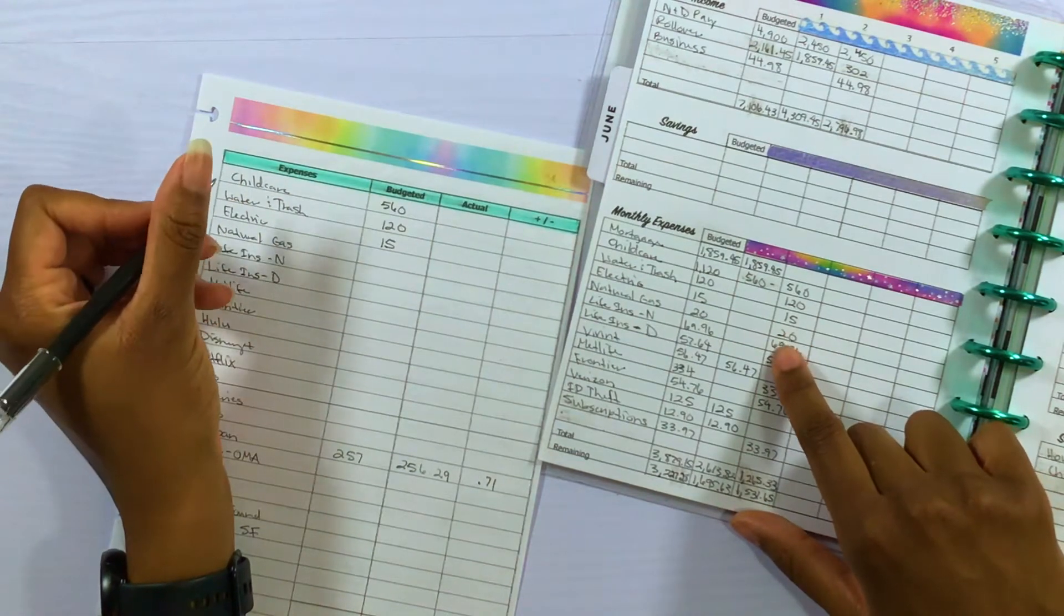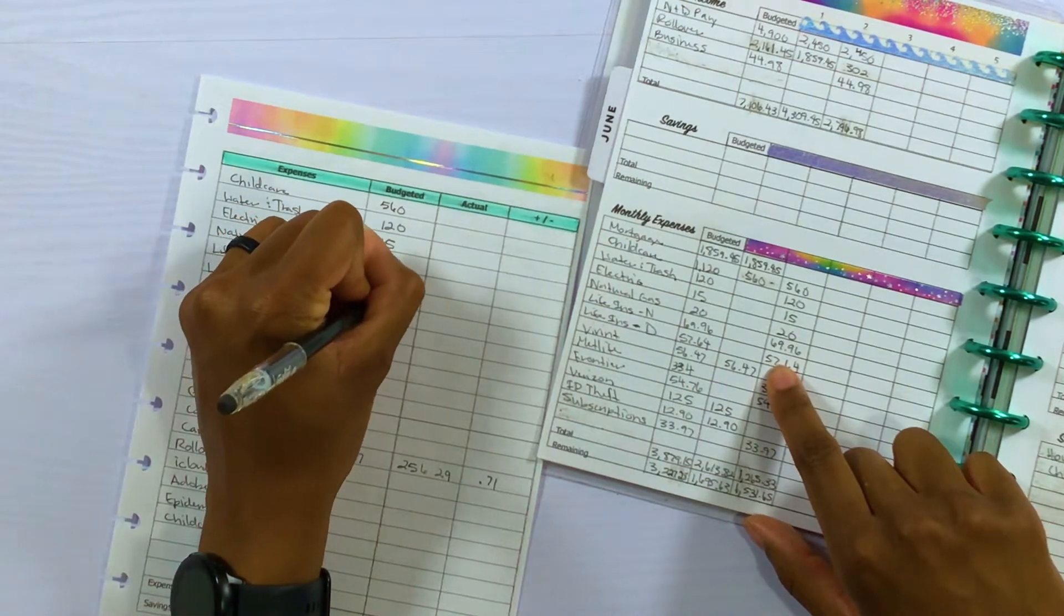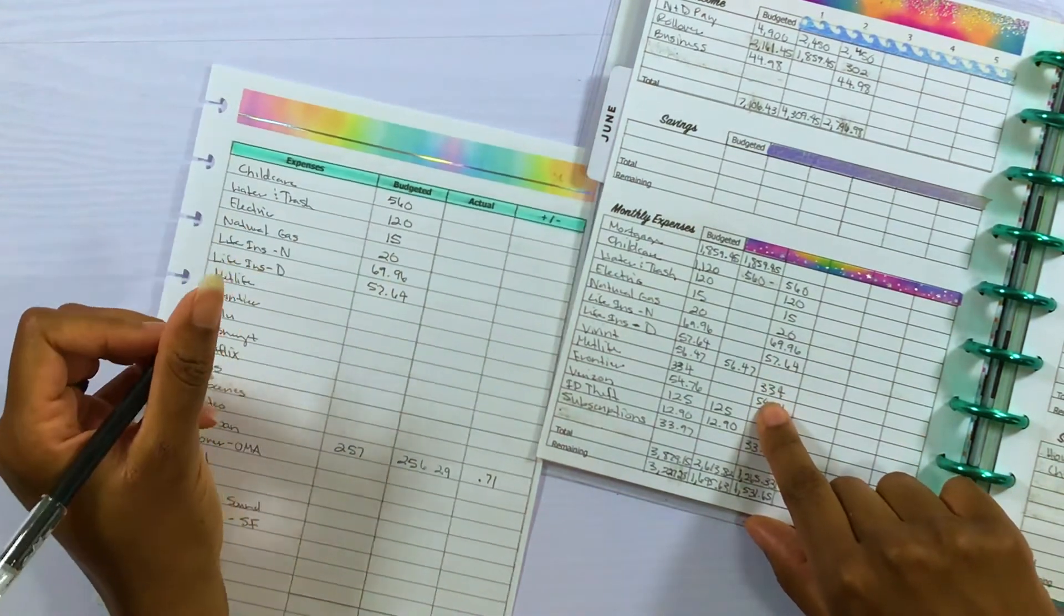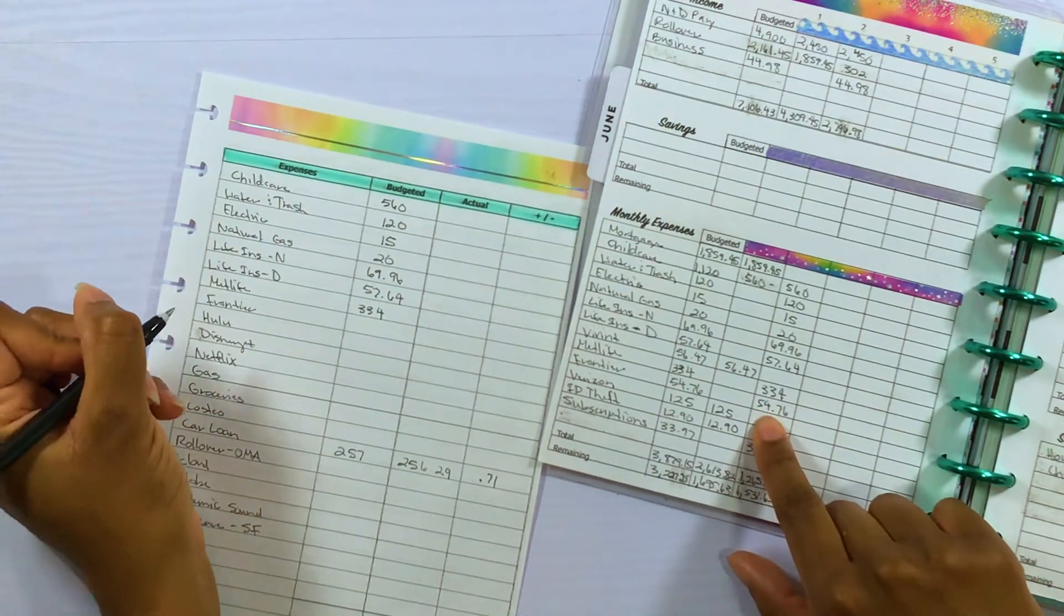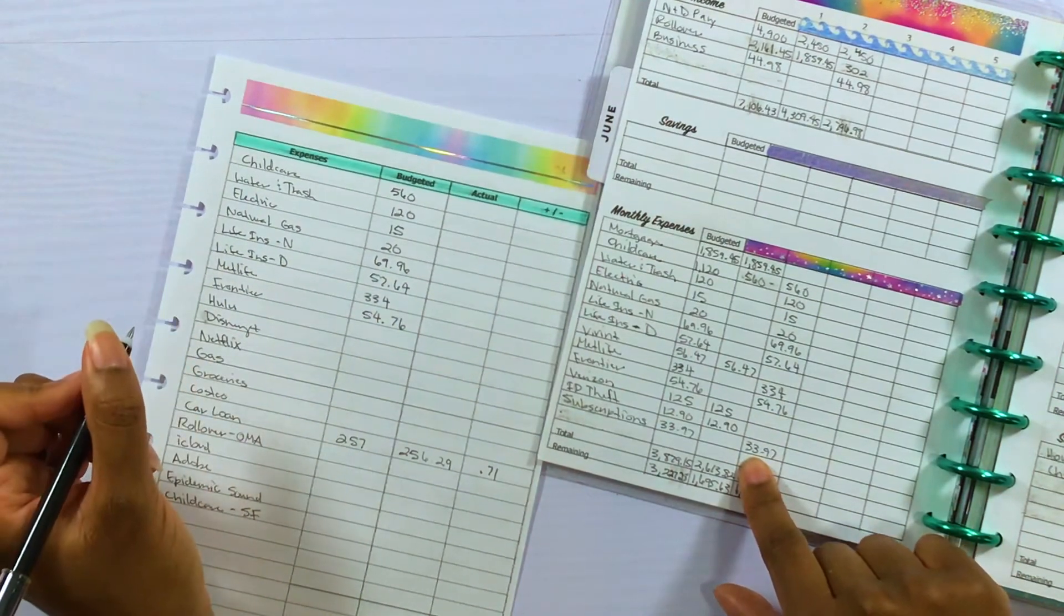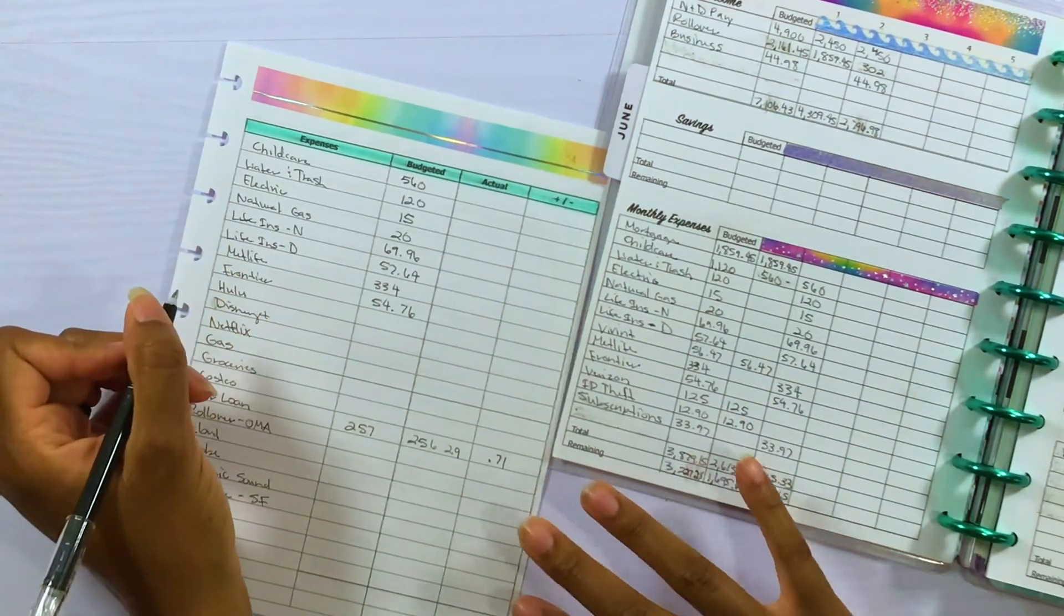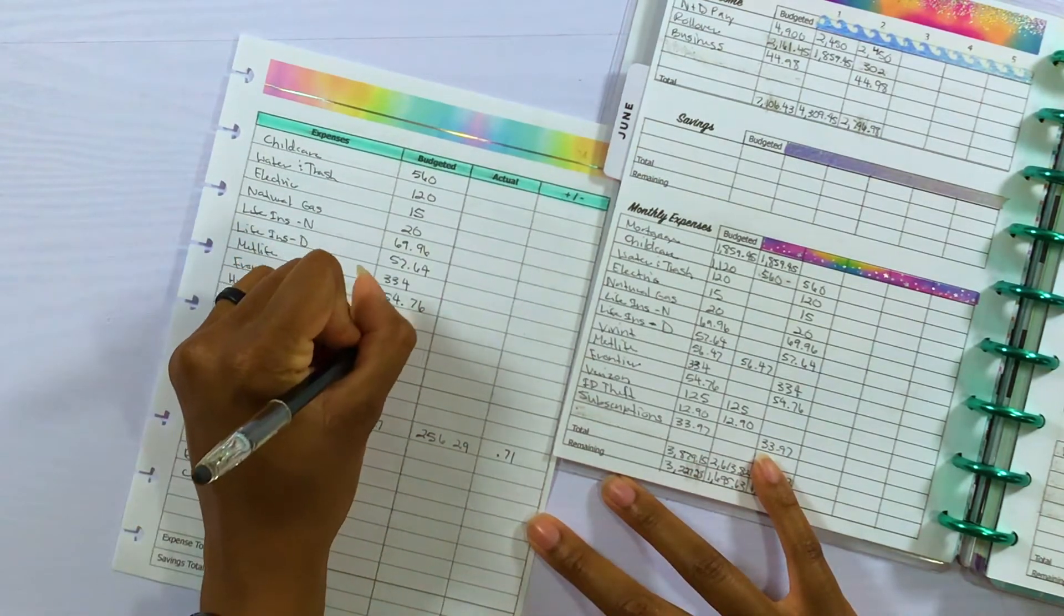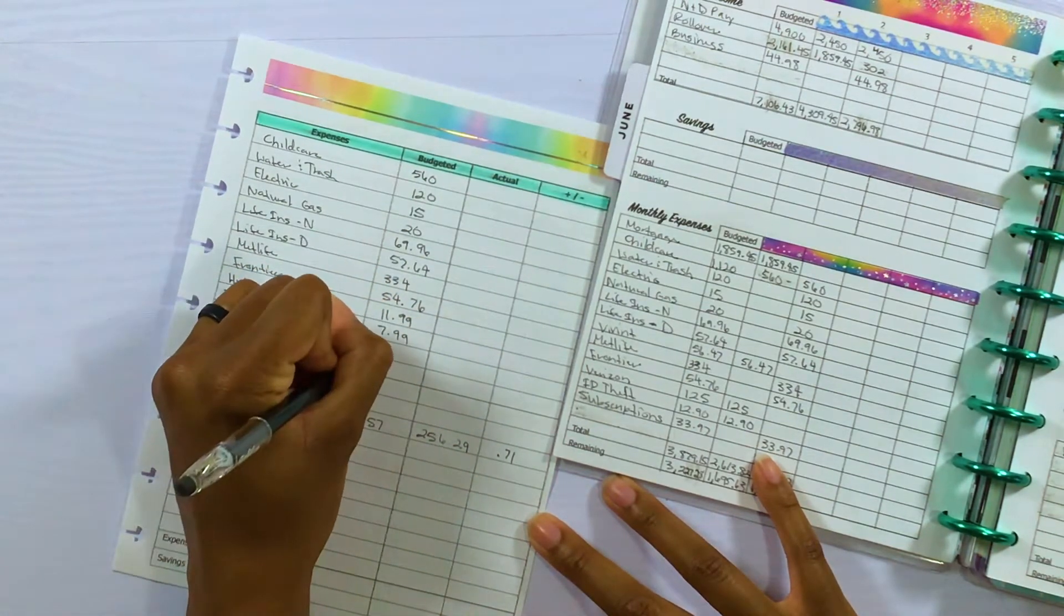So $560 for child care, $120 for water and trash, and all I'm doing is following column two which is all the expenses that I want to pay in paycheck two. That's all I'm doing and just copying it here. Electric is $15, natural gas is $20, life insurance for my husband is $69.96, life insurance for me is $57.64, Metlife which is our car insurance is $334, Frontier is $54.76.